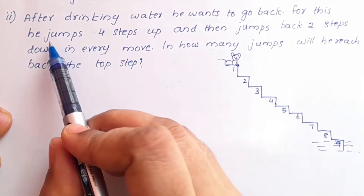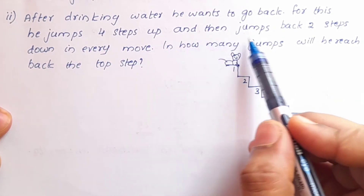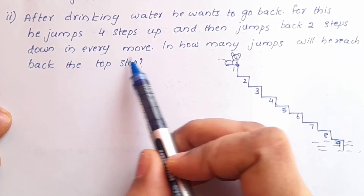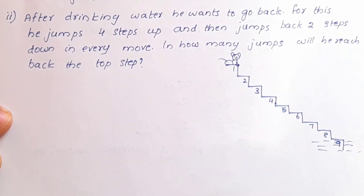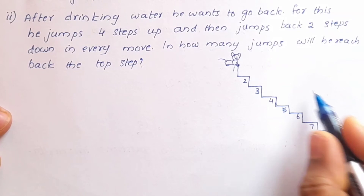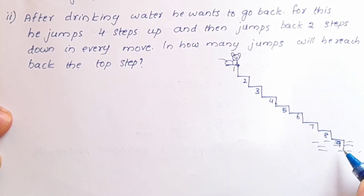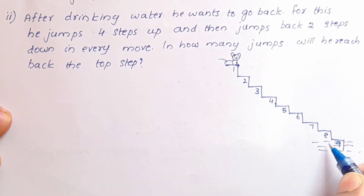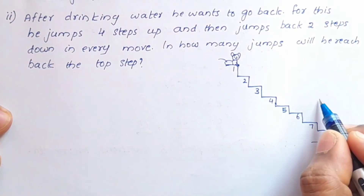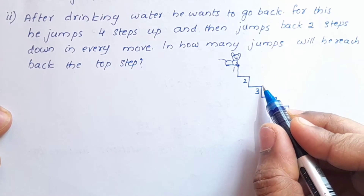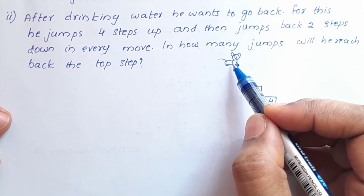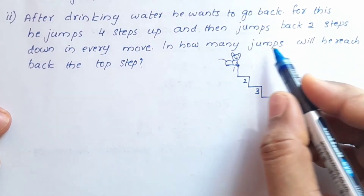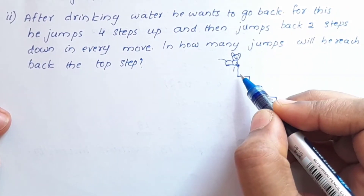After drinking water, the monkey wants to go back to the top. For this, he jumps 4 steps up and then 2 steps down in every move. In how many jumps will he reach back the topmost step? Starting from the 9th step, the first jump takes him 4 steps up.